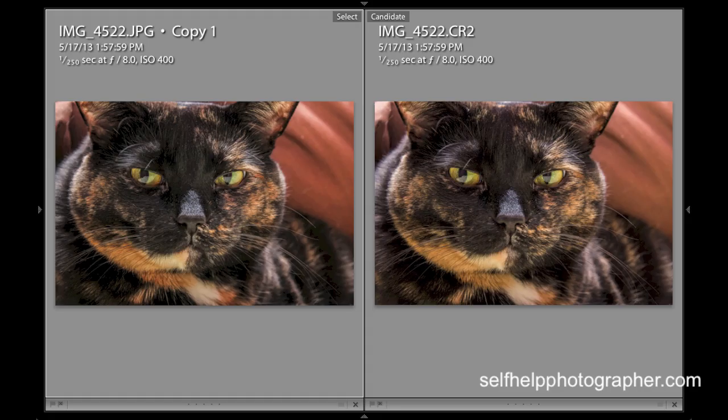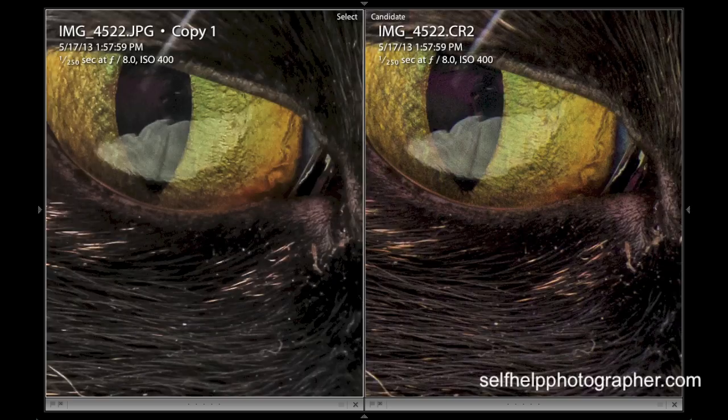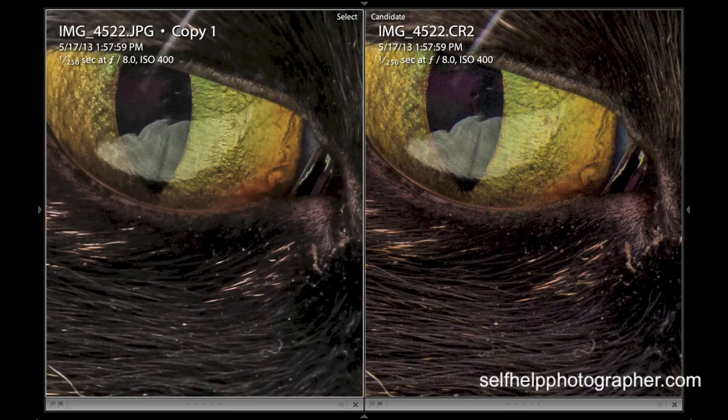Now let's look side-by-side at the JPEG and the raw file with the exact same post-processing software changes made to them. When you look at them zoomed out, they look pretty similar. There are differences, but they are slight. But when you zoom in, you can see the color and detail that the raw is capable of compared to the JPEG. The JPEG is muddier, it has less detail, and less color compared to the raw file.